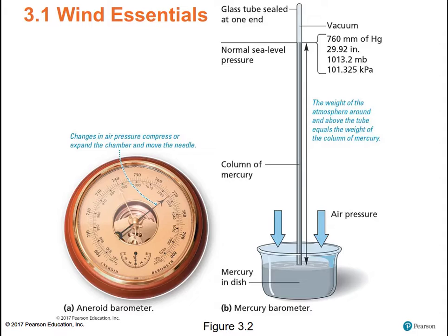Evangelista Torricelli was the first person to make a barometer. He took a glass tube, filled it with mercury, turned it upside down, put it into a dish of mercury, unplugged it, so the mercury in the top dropped down under the weight of gravity, making a vacuum at the top.